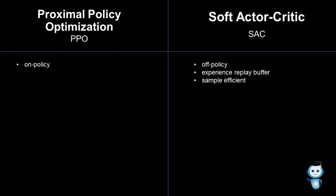Besides that, SAC is suited for changing environments because it's a maximum entropy algorithm. Think of it as knowing the top five ways to solve a task instead of just the best one. So when the best way is not possible anymore, the agent can quickly adapt by trying its alternative ways to solve the task. Examples where SAC is widely used are bot games and robotics.